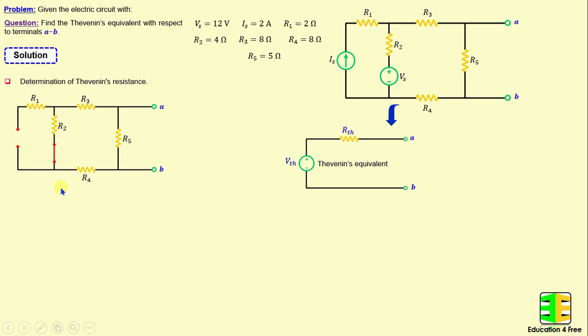The Thevenin resistance represents the equivalent resistance between terminals A and B. That means RTH is equal to the series combination of R2, R3, and R4 connected in parallel with R5.